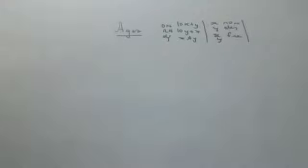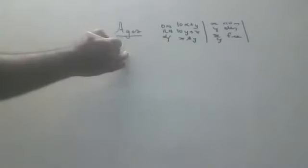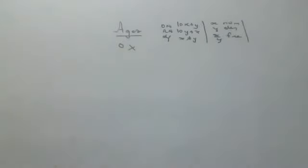Number one: when you are finding age, remember children, age should never come zero. Zero means you did not born only — age should never come to zero.